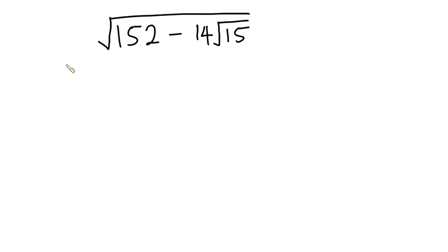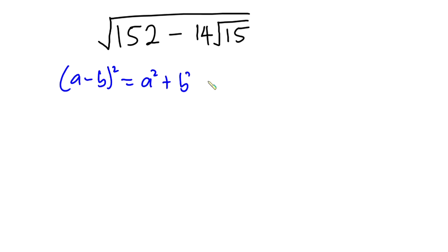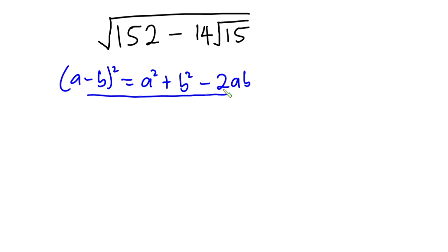The very first thing I'm going to do is write this algebraic identity: (a minus b) squared is equal to a squared plus b squared minus 2ab. Now I'm pretty sure the question on your mind is how does this algebraic identity relate to the problem? But guess what — this algebraic identity is the key to this problem without using a calculator.